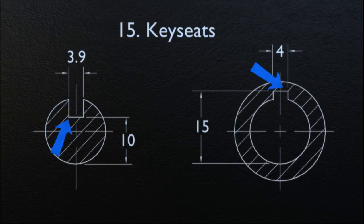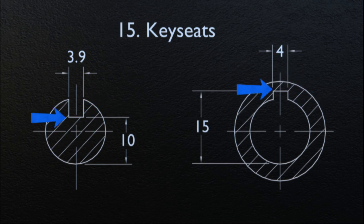Now let's take a look at key seats. Key seats are dimensioned by width, depth, location, and if required, length. The depth may be dimensioned from the opposite side of the shaft or hole, as illustrated on the screen.